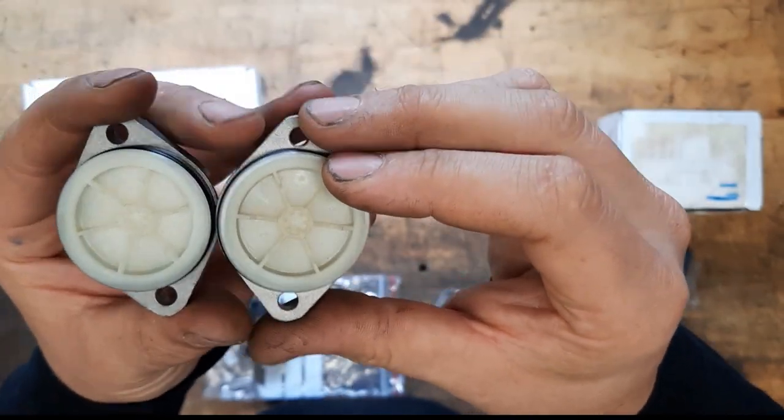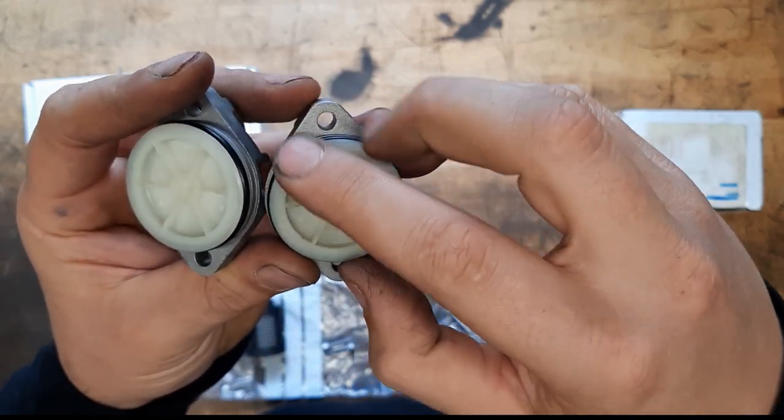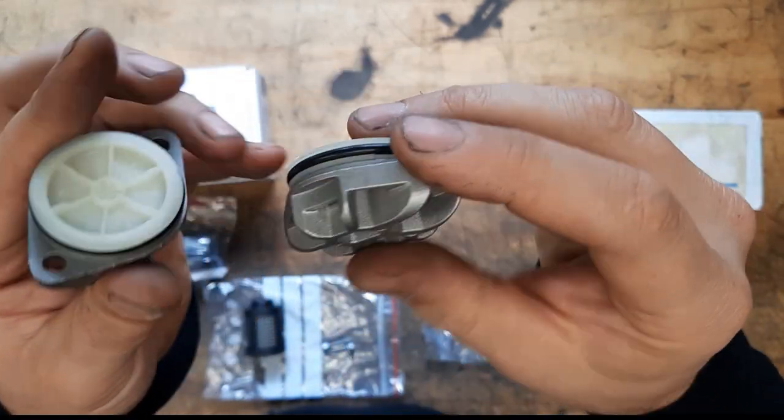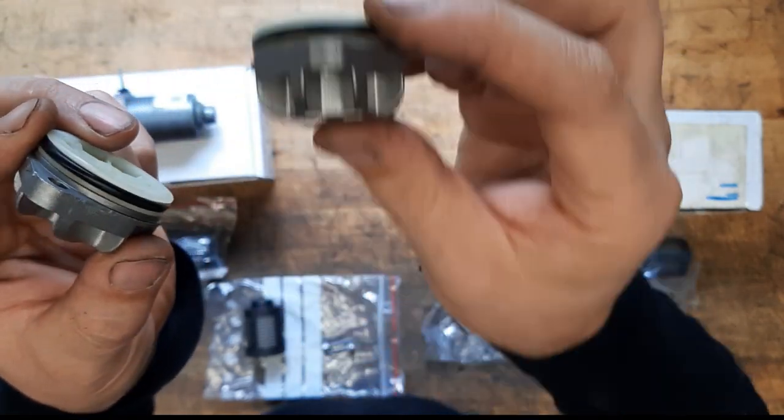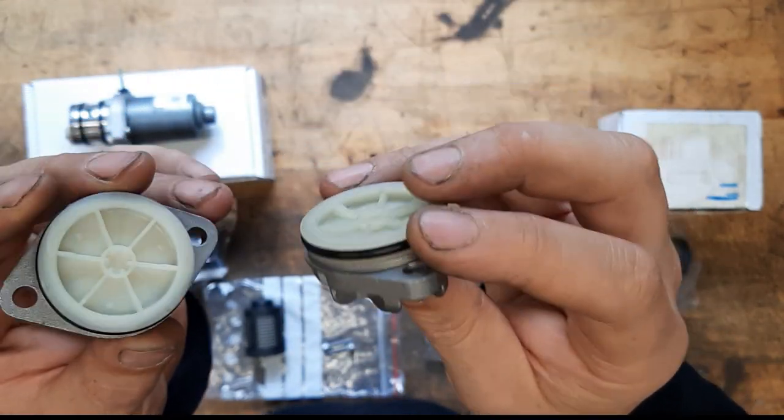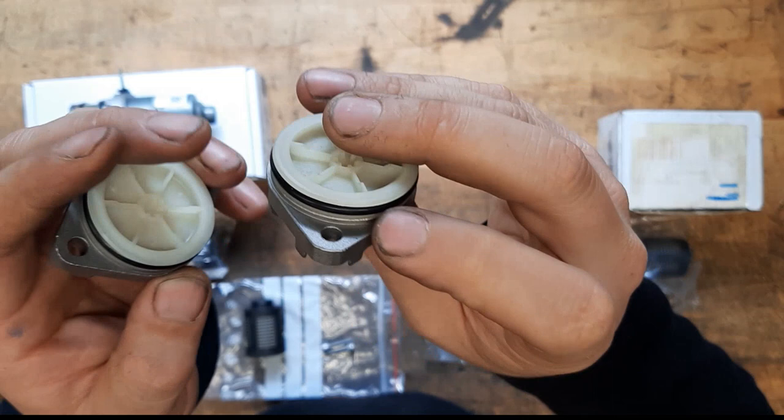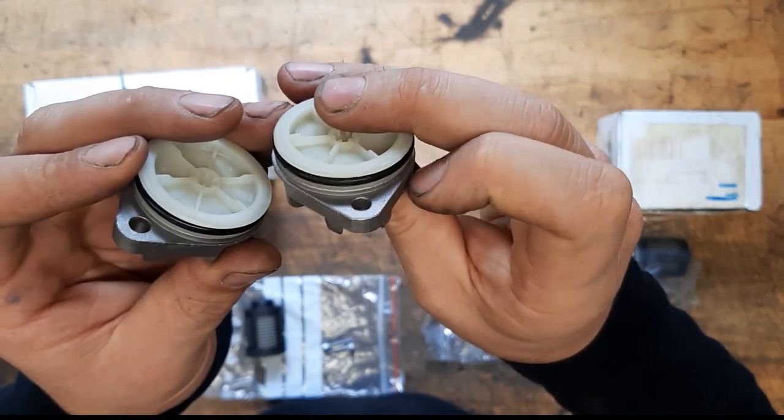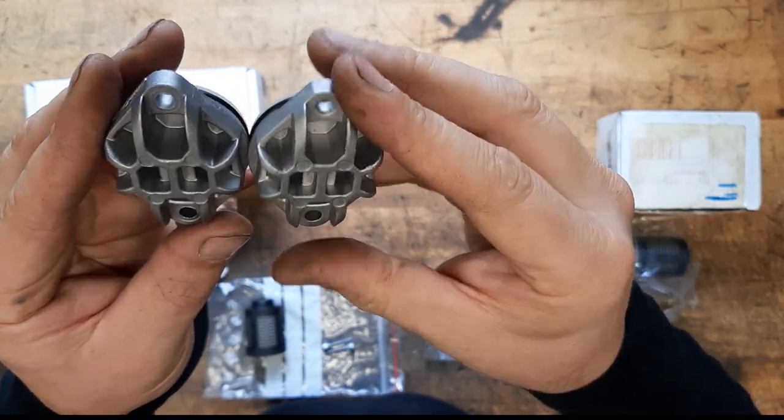The other problem with the copy parts is the dimensions. Where this seal sits, it's actually too big. So if you're really struggling to push the filter in, it's probably because it's a copy one. As you struggle to push it in, you then chew the O-ring up and then it leaks.